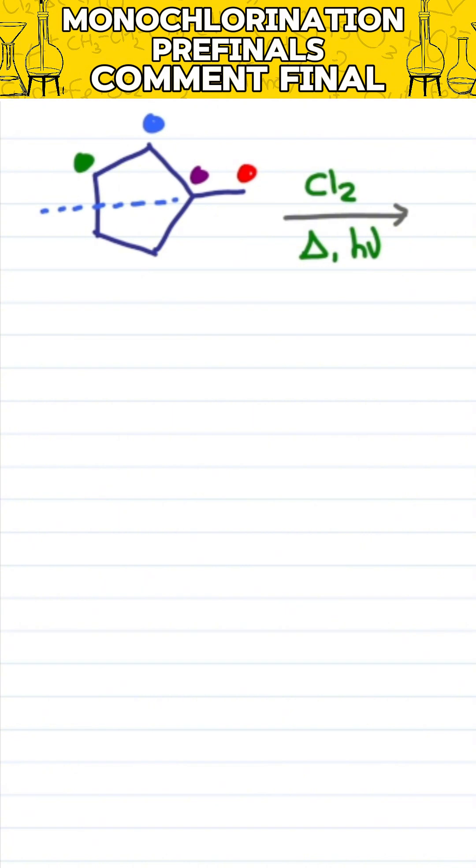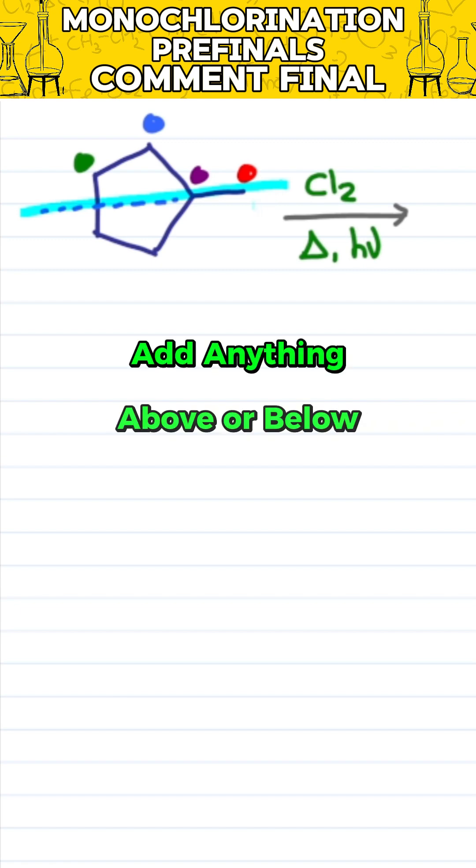Get rid of the extras, now which one would be chiral? If methyl is a substituent on the ring. Since we start with symmetry, if you add anything above or below, it makes it asymmetrical or chiral for two versions of the green and blue.